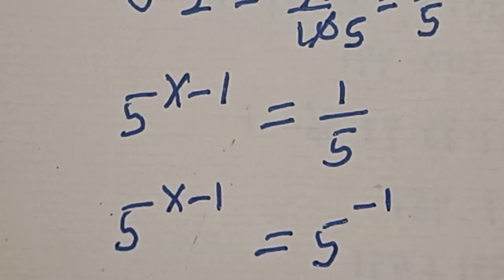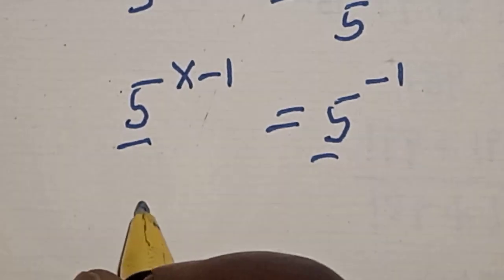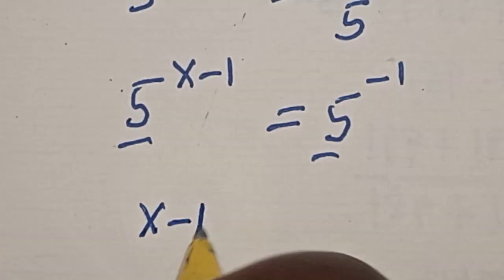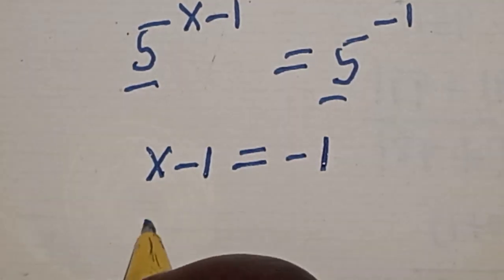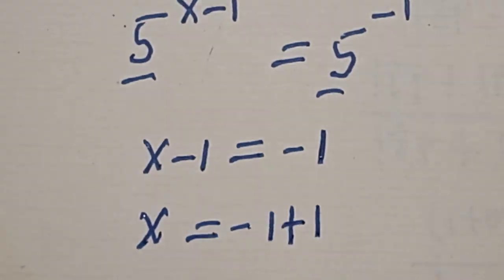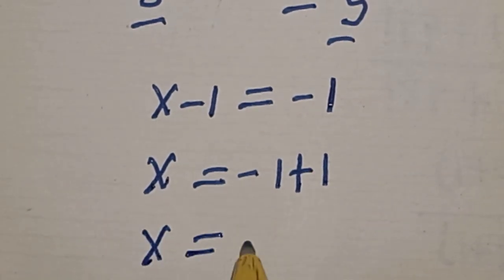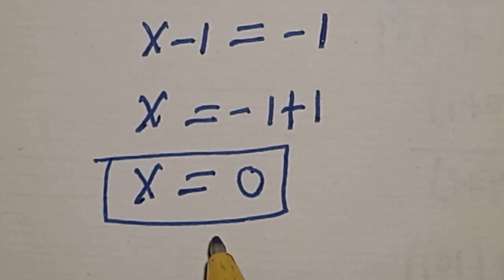They have the same base, so x minus 1 is equal to minus 1. x is equal to minus 1 plus 1. Then x is equal to 0. That is our answer. Let's check to confirm if this answer is correct.